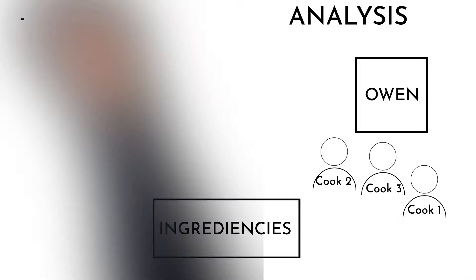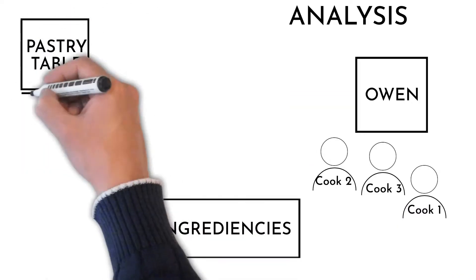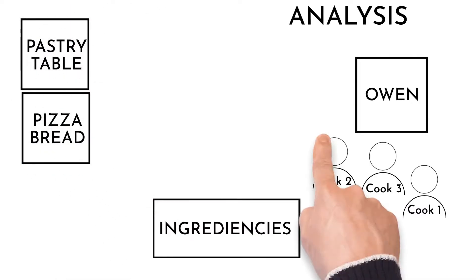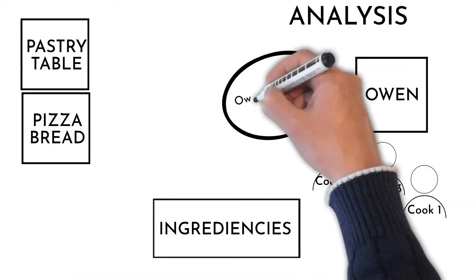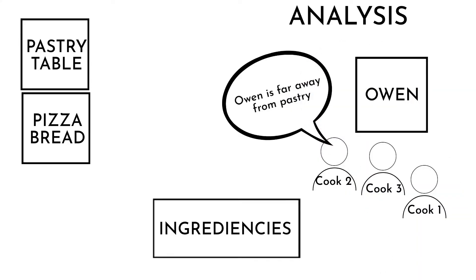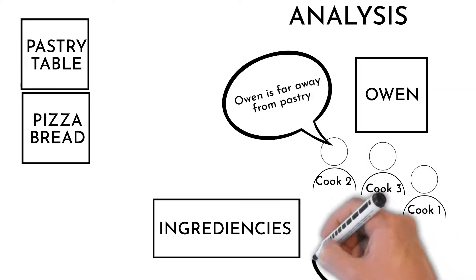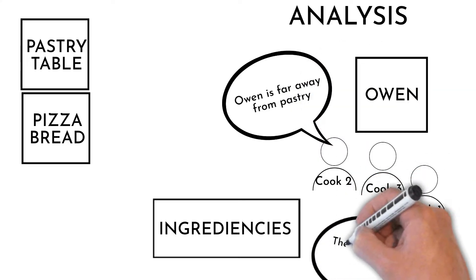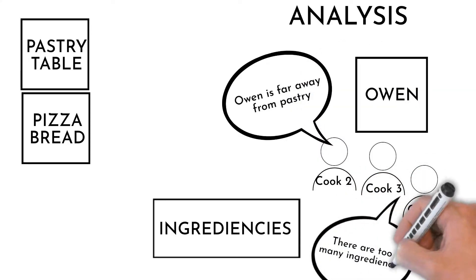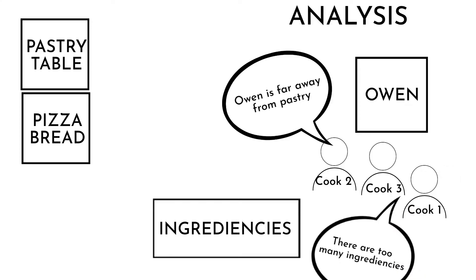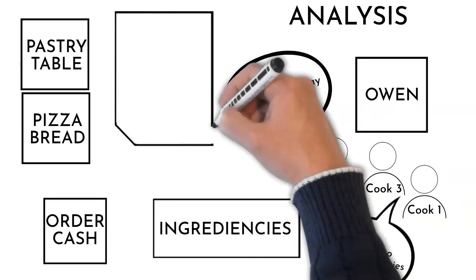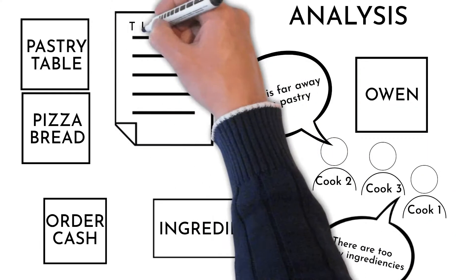The oven was also quite far from where the pastry is made, resulting in a lot of walking back and forth. Additionally, there were too many ingredients, some used very seldom. Out of their current menu of 40 different pizzas, only 10 were ordered 80 percent of the time.